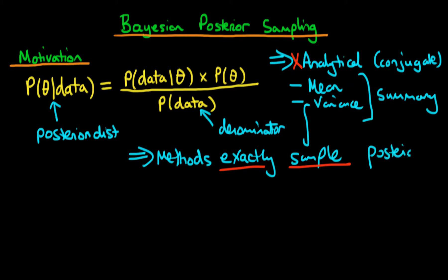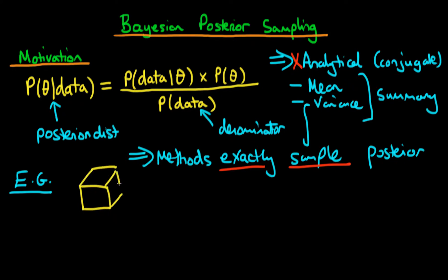We're going to introduce the concept of sampling via two particular examples. The first example is the case of a die. Let's say I've got a die — and just to stress, this is ordinary statistics; I'm not really thinking in Bayesian terms at all.